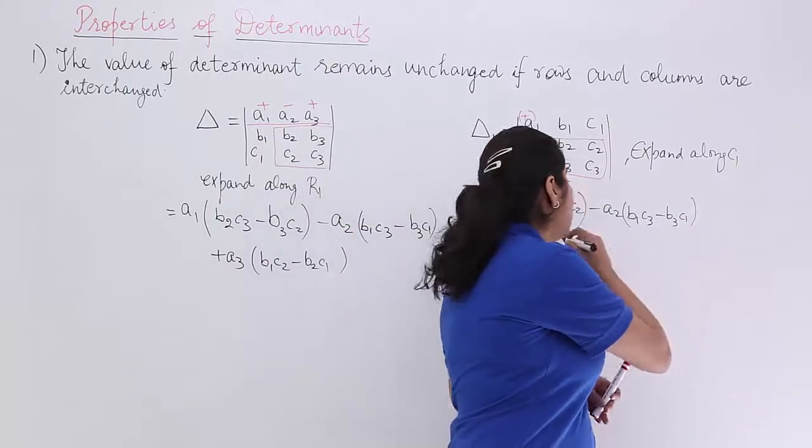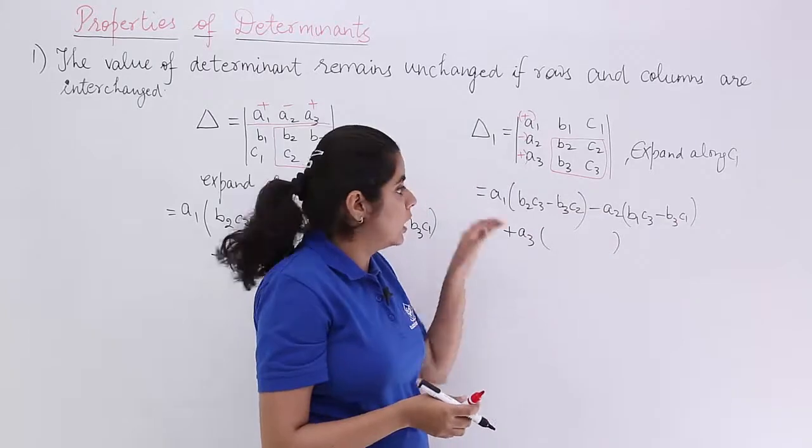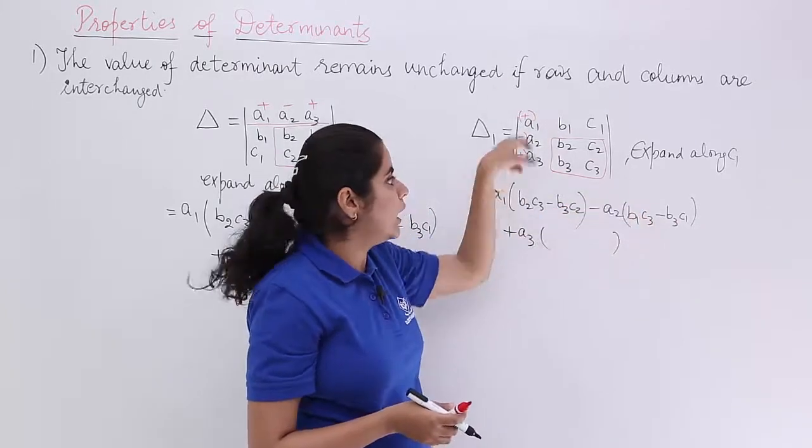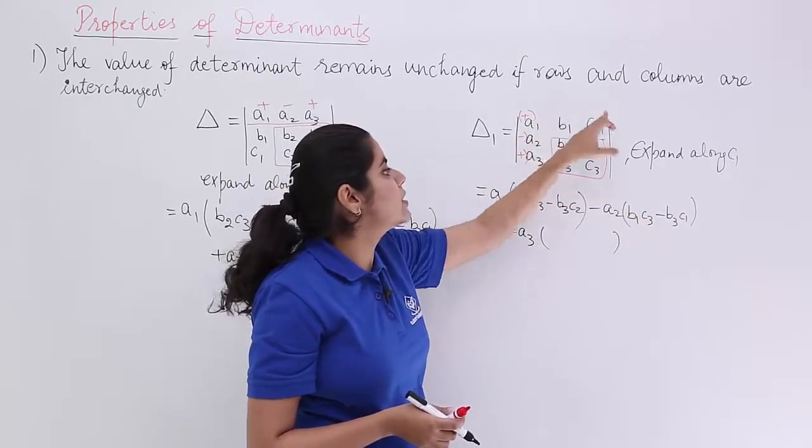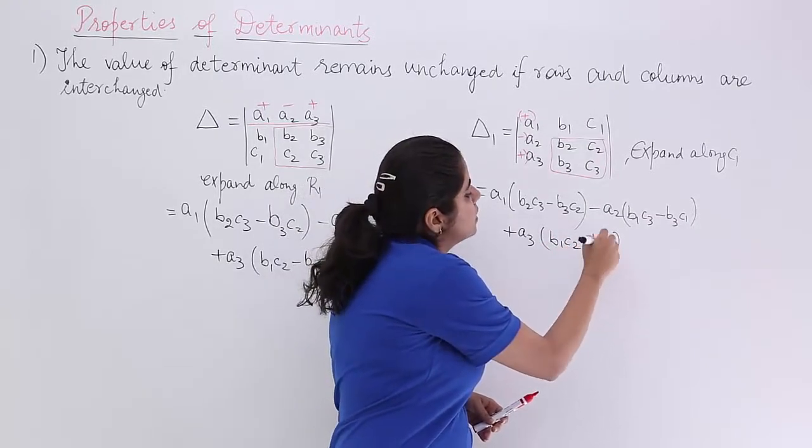Last but not the least, you have plus a3. So, you have plus a3. Then, ignore third row. Ignore first column. You have b1, c1, b2, c2. So, it is b1c2 minus b2c1.